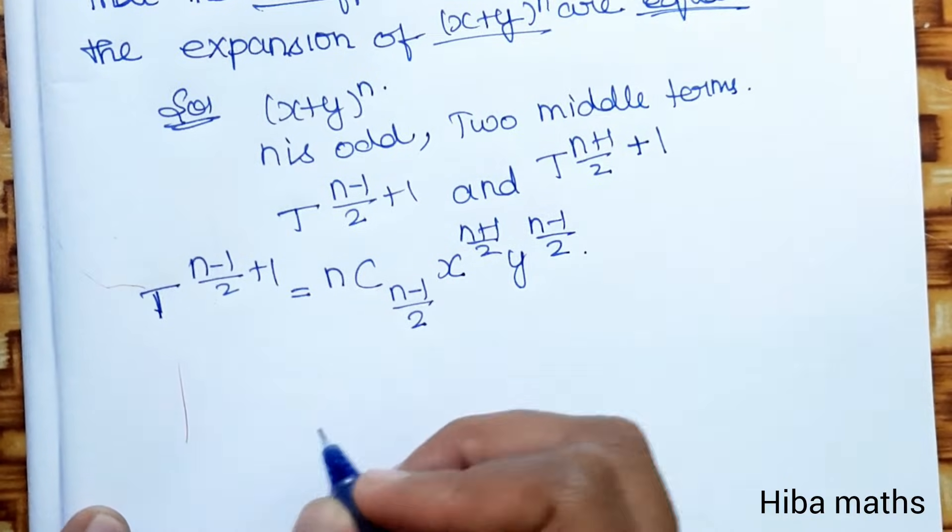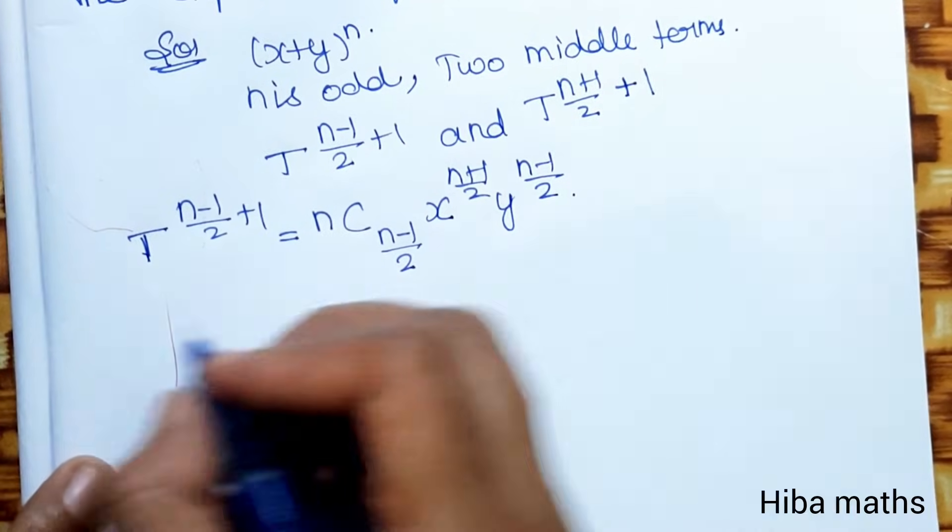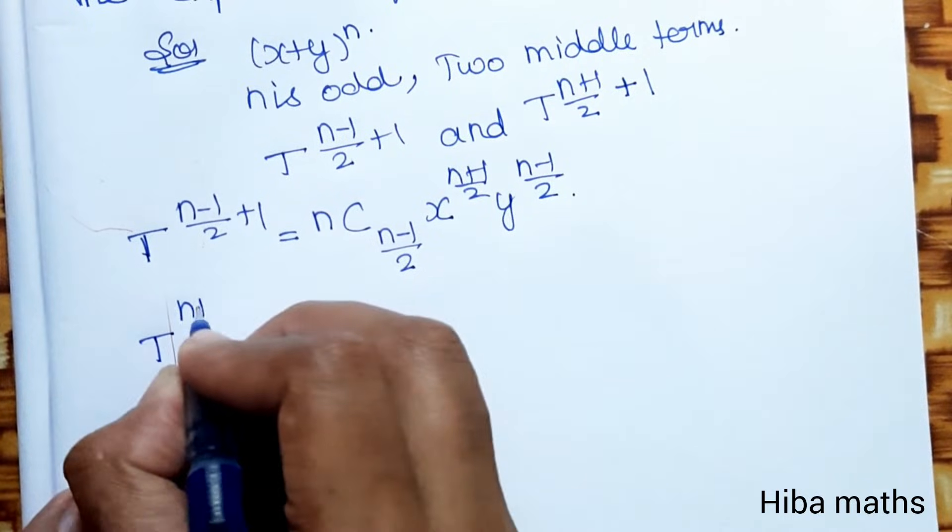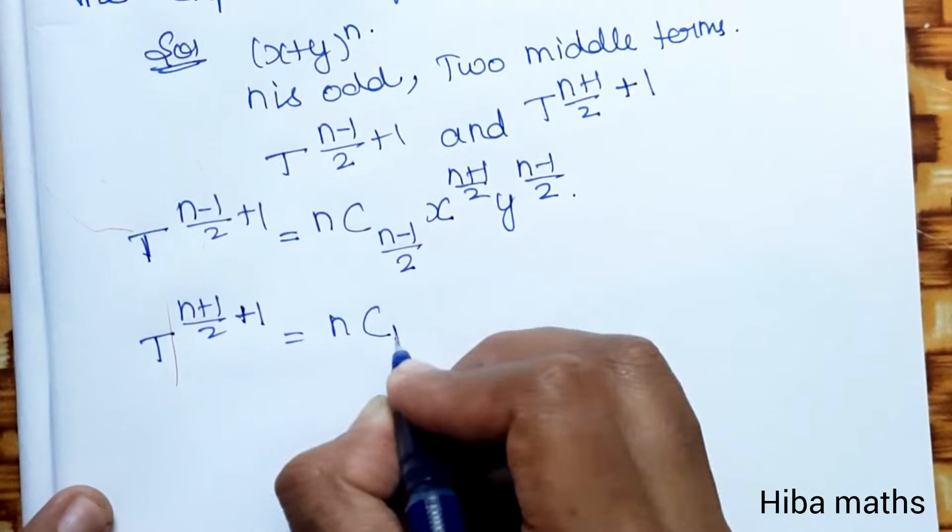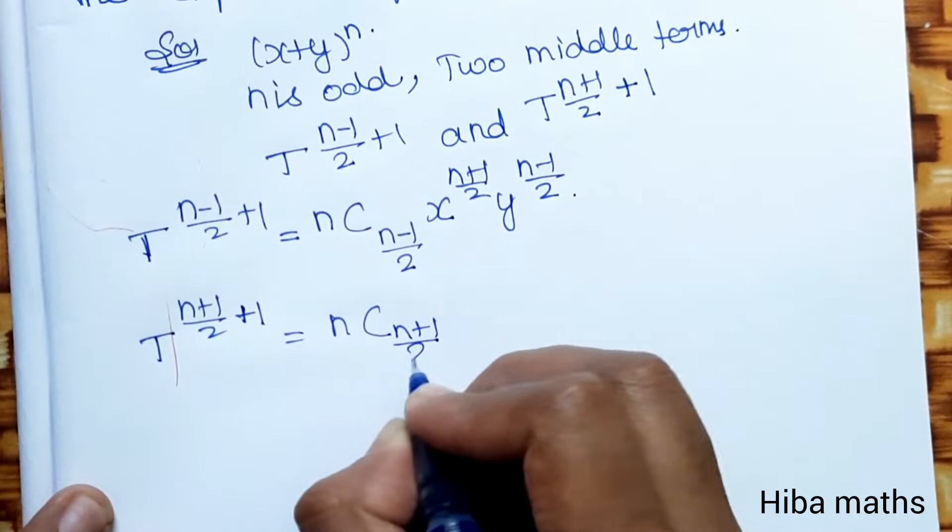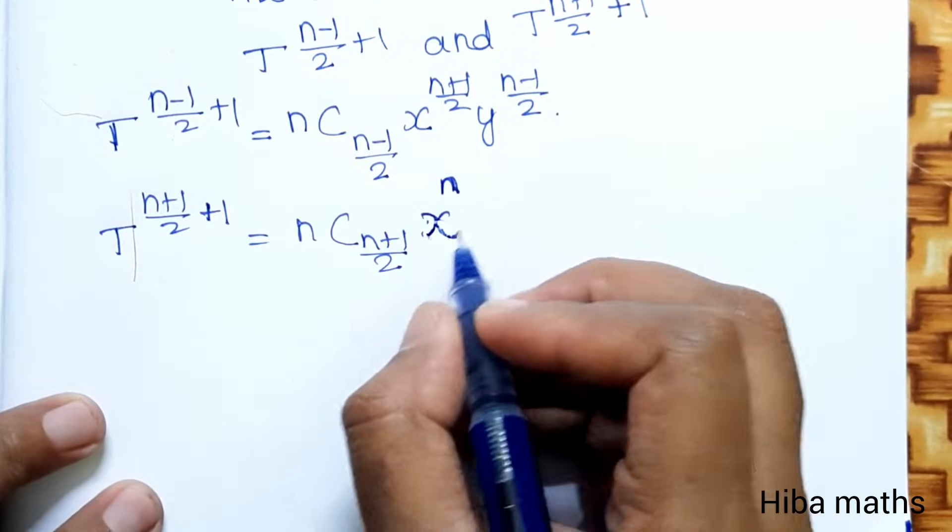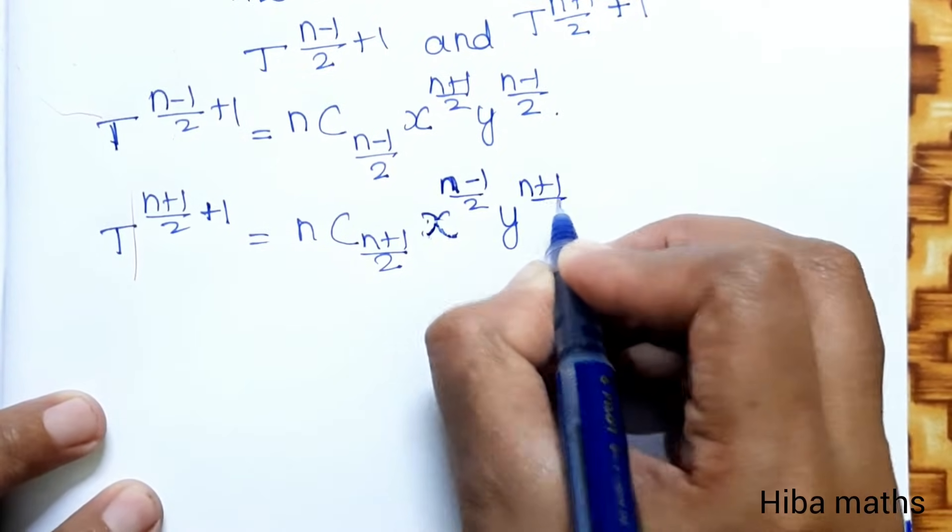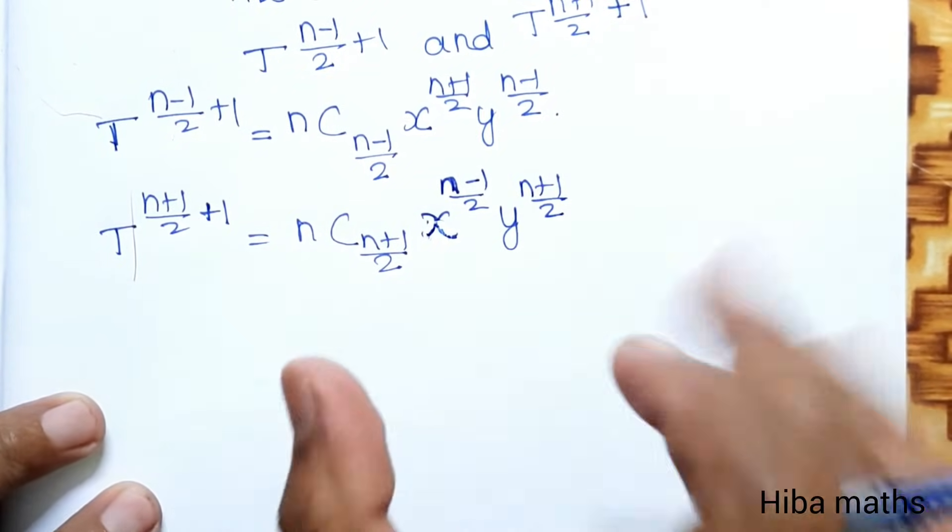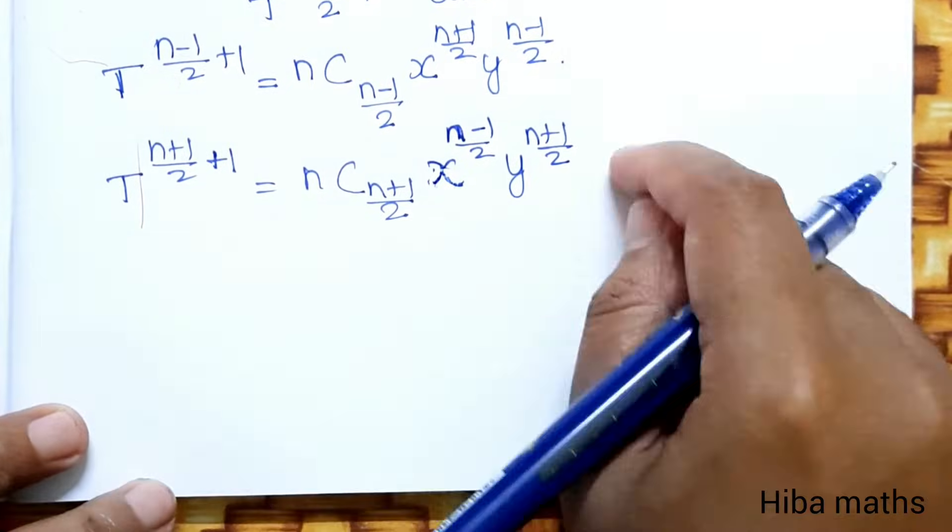The first term has x power (n+1)/2 and y power (n-1)/2. The second term has x power (n-1)/2 and y power (n+1)/2. These are the two middle terms.